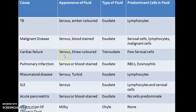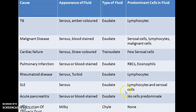In cardiac failure, the fluid is serous and straw-colored — it is a transudate with few serous cells. In pulmonary infarction, the fluid is serous or blood-stained, exudative, with RBCs and eosinophils predominating. In rheumatoid disease, the fluid is serous and turbid, exudative, with lymphocytes predominating. In SLE, the fluid is serous, exudative, with lymphocytes and serous cells. In acute pancreatitis, the fluid is serous or blood-stained and exudative. In obstruction of the thoracic duct, the fluid is milky — a special type called chyle.